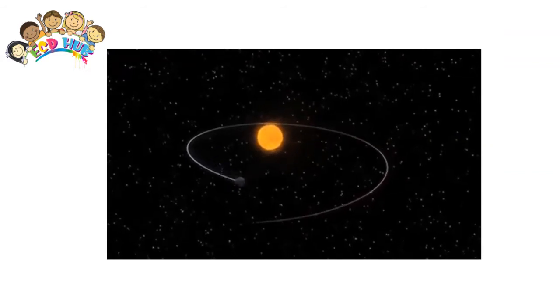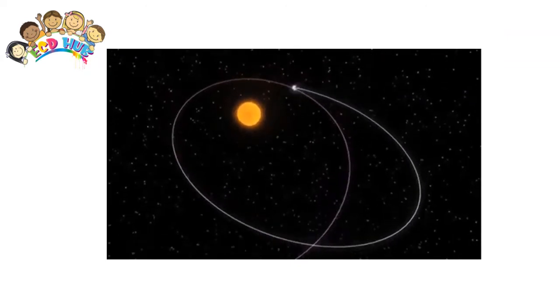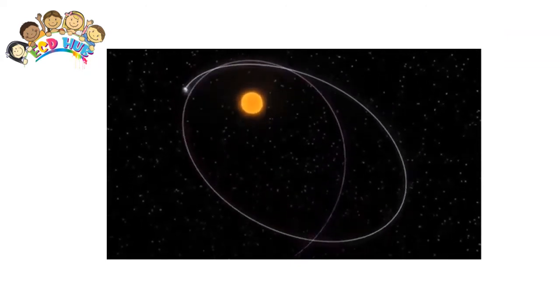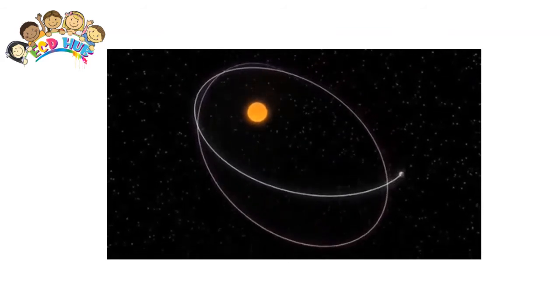As the Earth orbits the Sun, the amount of sunlight each location on the planet gets every day changes slightly. This change causes the seasons.